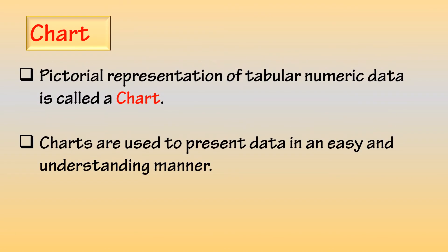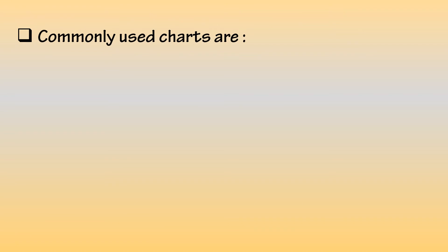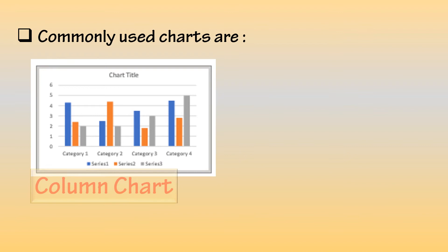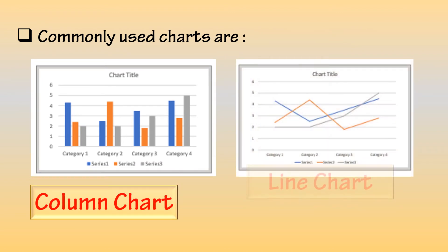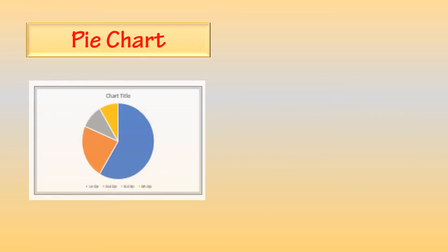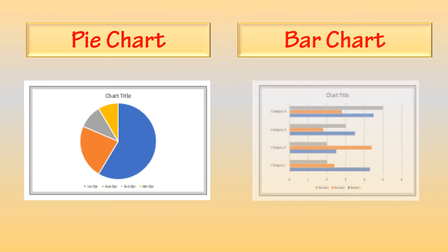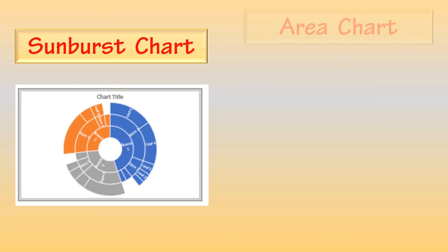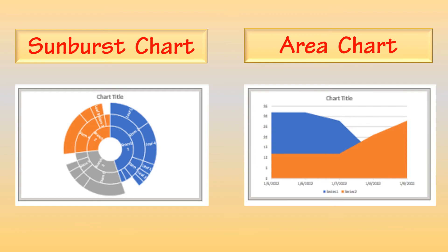Chart: A pictorial representation of tabular numeric data is called a chart. Charts are used to present data in an easy and understandable manner. Commonly used charts are column chart, line chart, pie chart, bar chart, sunburst chart, and area chart.